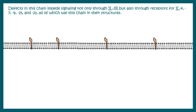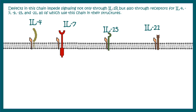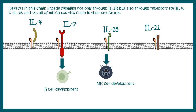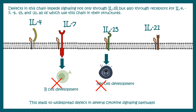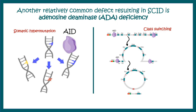The IL-2 receptor gamma chain is actually a co-receptor for several interleukin receptors, including IL-4, IL-7, IL-15, and others. IL-7 is really important for B cell development, whereas IL-15 is important for NK cell development. In the absence of IL-7 or IL-15 mediated signaling, B cell or NK cell development can be abrogated. AID deficiency is another important cause of SCID, as AID is important for somatic hypermutation and class switching — all B cell maturation processes. Ultimately, most causes of SCID come down to abrogated T cell and B cell development or low circulating numbers.